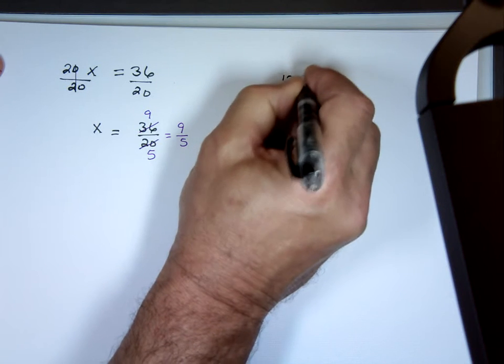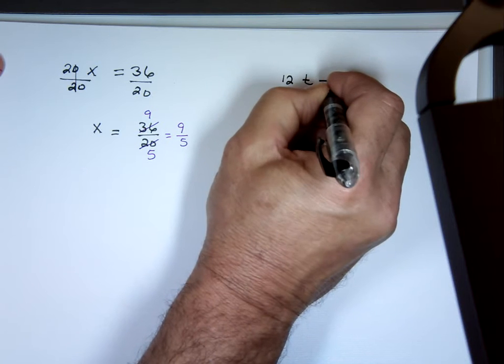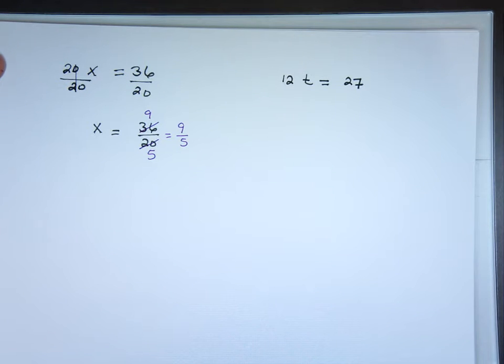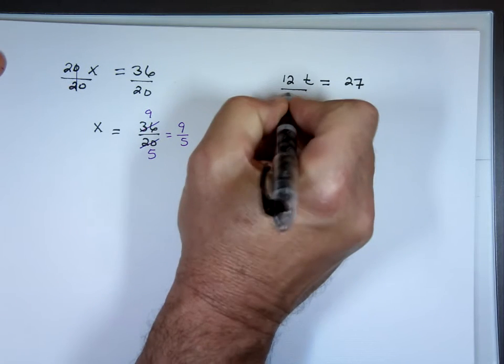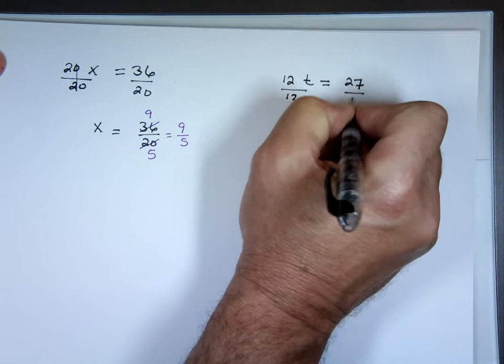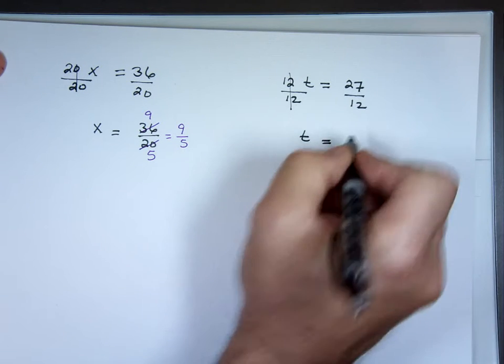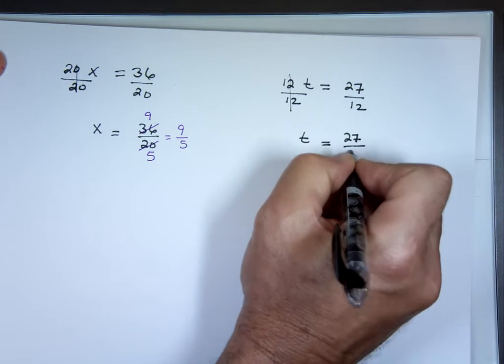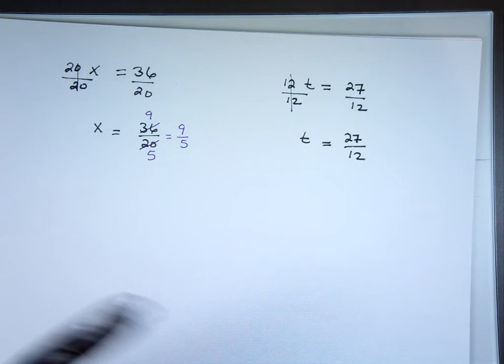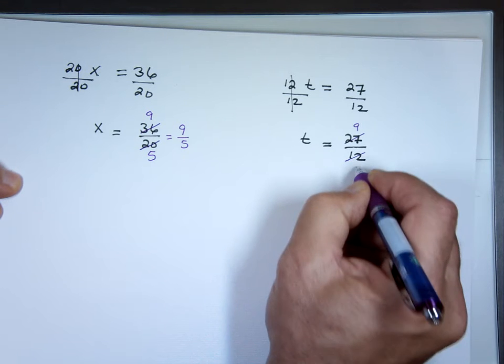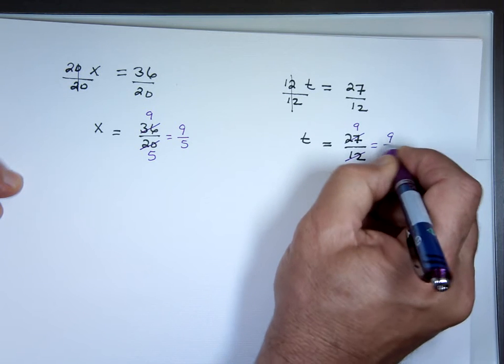12t equals 27. What do we do here? Divide by 12. T equals what? 27 over 12. Can I simplify that? By 3, this is 9. By 3, this is 4. 9 over 4.